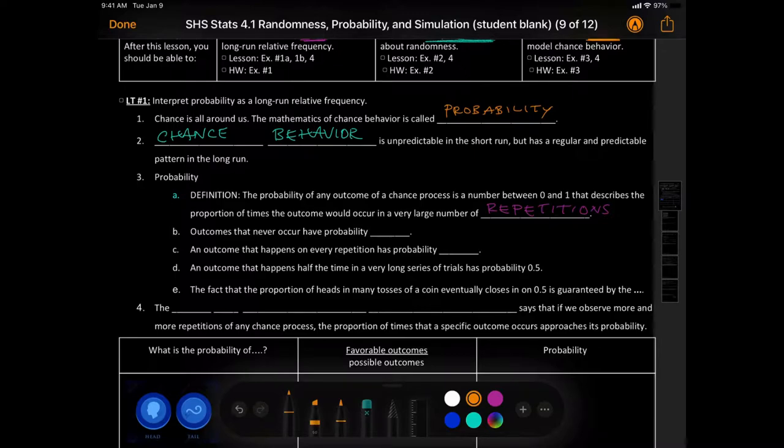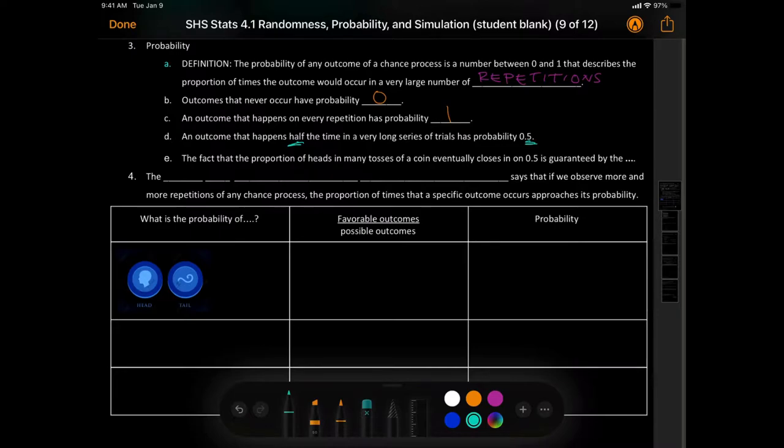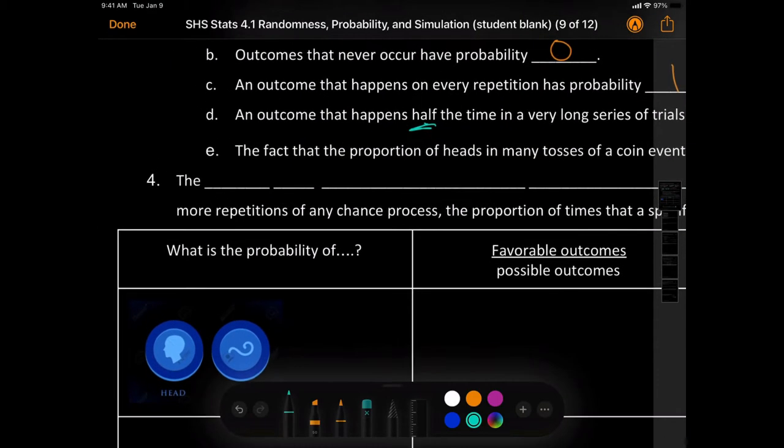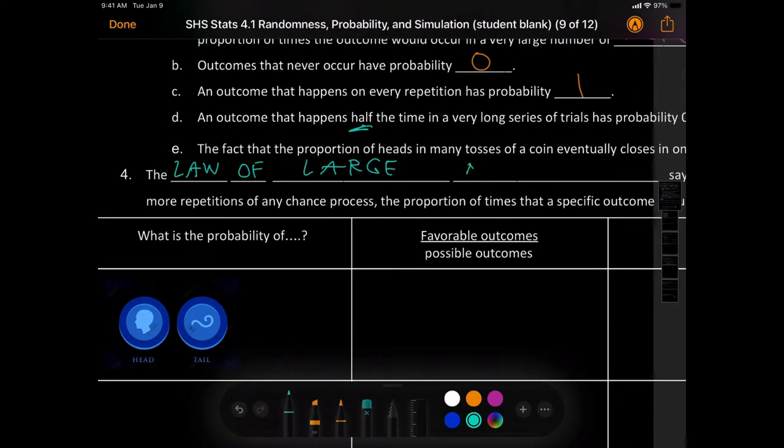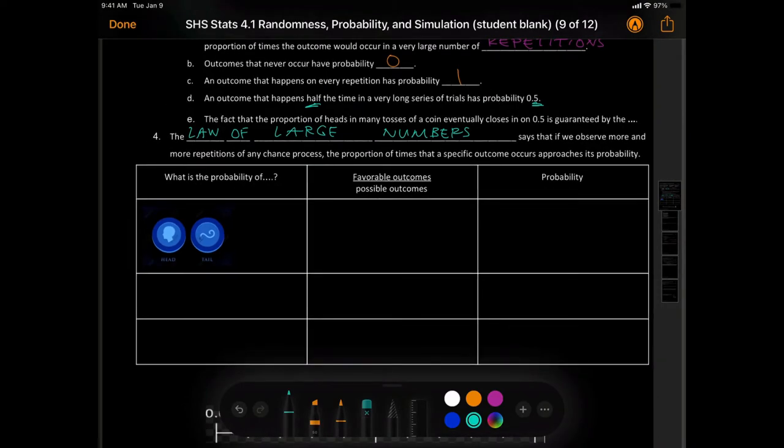That describes the proportion of times that outcomes would occur in a very large number of repetitions. Outcomes that never occur have a probability of zero and an outcome that happens on every repetition has a probability of one. An outcome that happens half the time in a very long series of trials has a probability of 0.5. And the fact that the proportion of heads in many tosses of a coin eventually closes in on 0.5 is guaranteed by something called the law of large numbers.